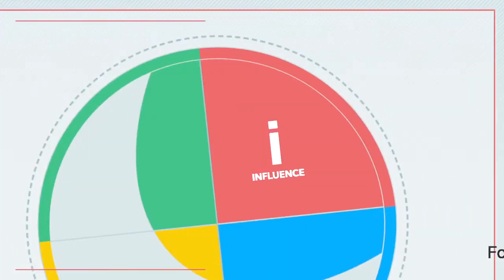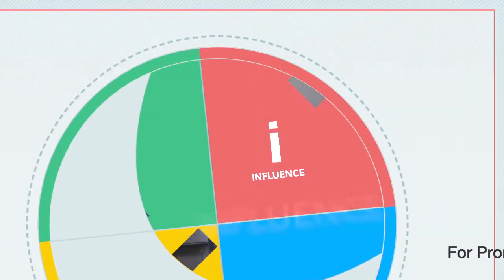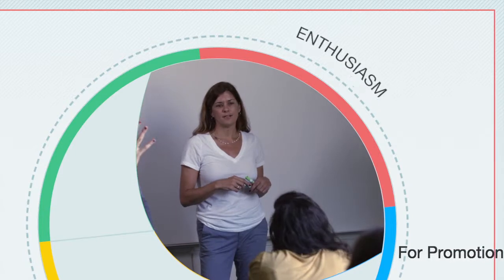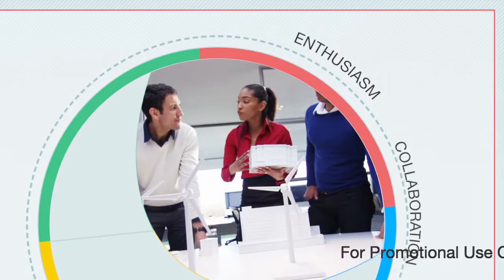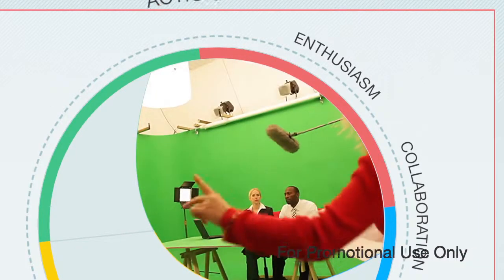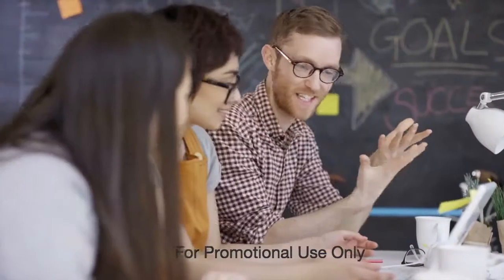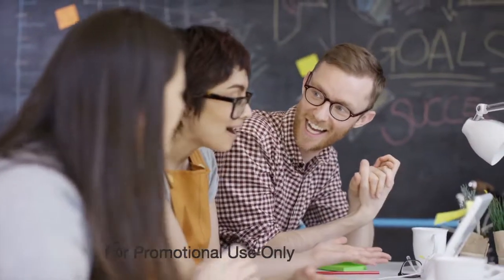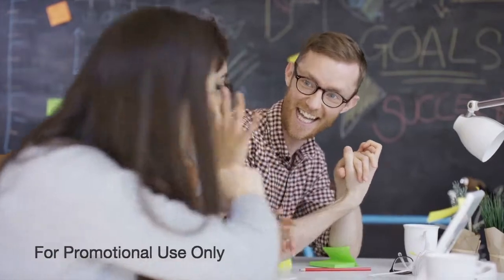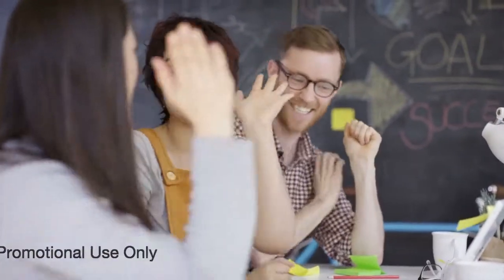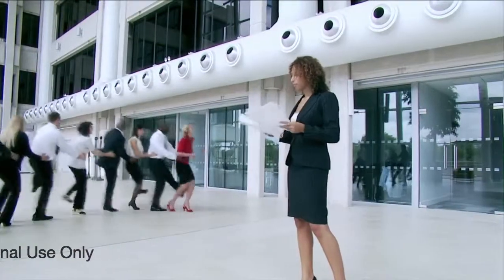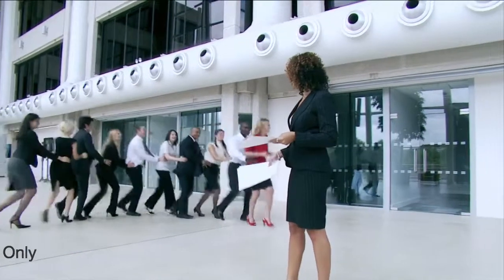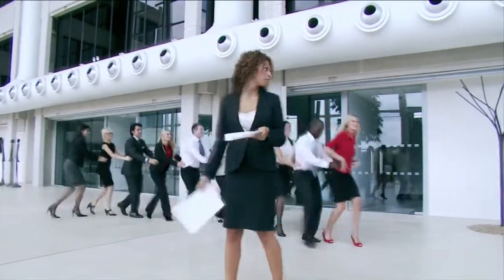If you have an I, or influence style, you probably approach work with enthusiasm, enjoy collaboration, and take quick action. Others with the I style probably find your energy exciting, even if the two of you are a little too optimistic at times. Different styles may find this sort of liveliness and fast pace to be sloppy or reckless.